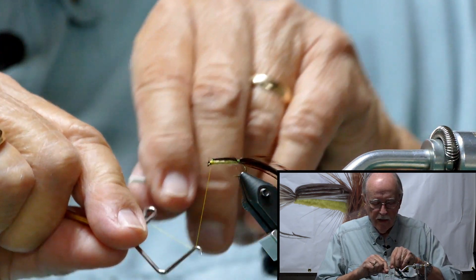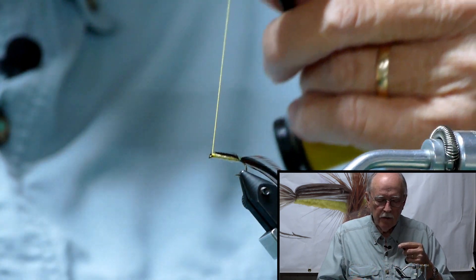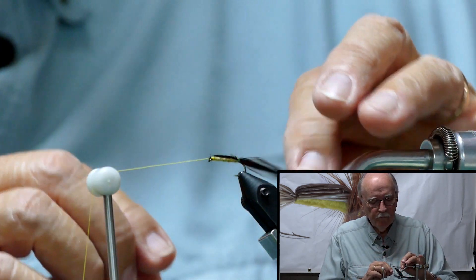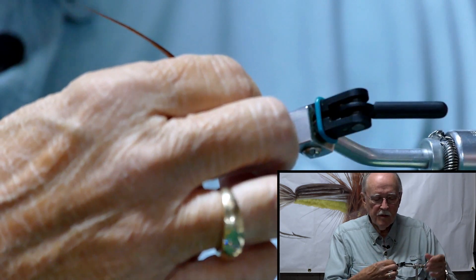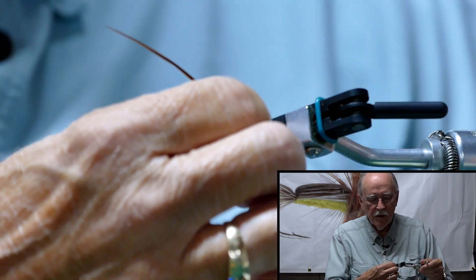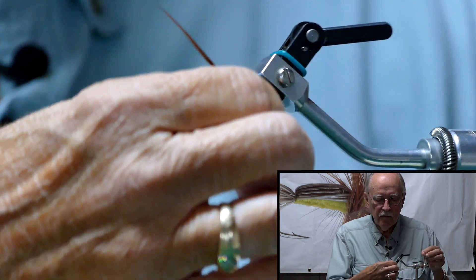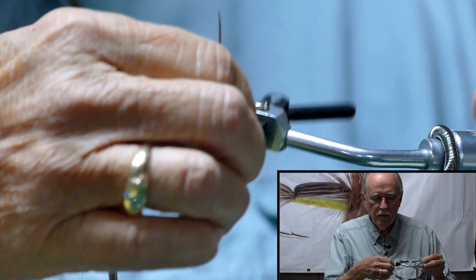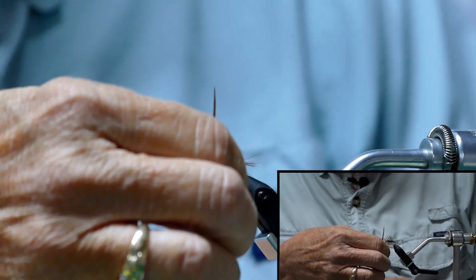Tie it down. At this point, I usually tie it off just so I can wind my hackle using the rotary function here. I'm going to pull this up straight. Keep in mind, we've got the dull side facing the front now so that it's cupped in that direction.